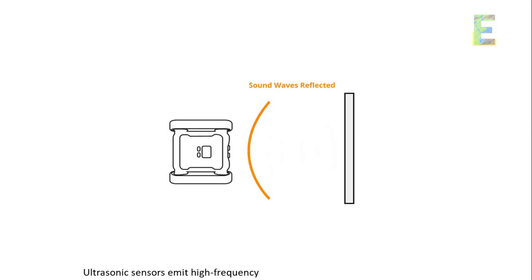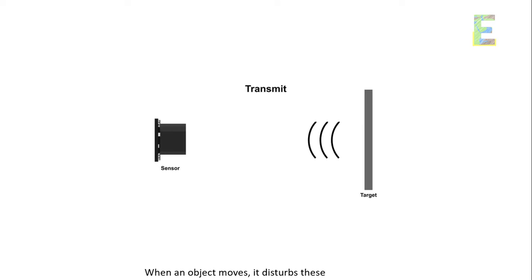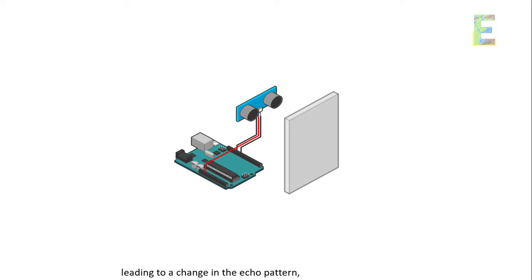Ultrasonic sensors emit high frequency sound waves and listen for their echoes. When an object moves, it disturbs these sound waves, leading to a change in the echo pattern, which the sensor detects.